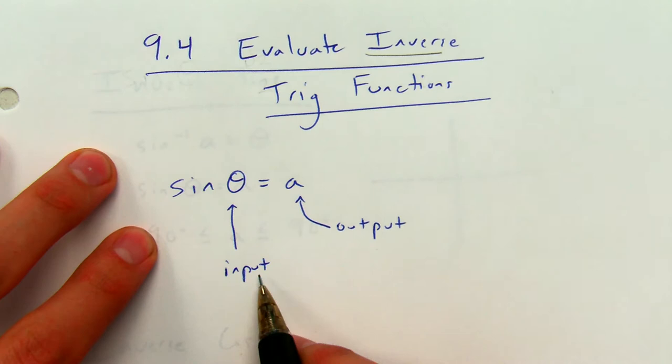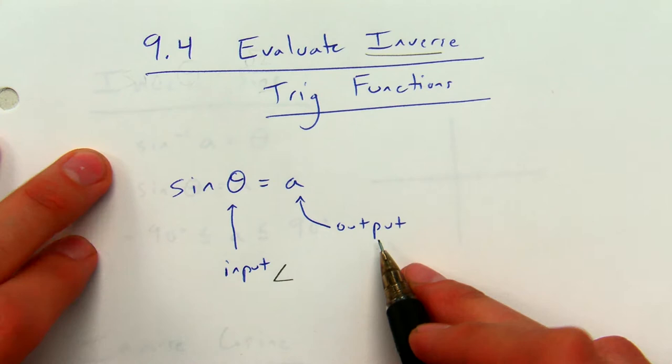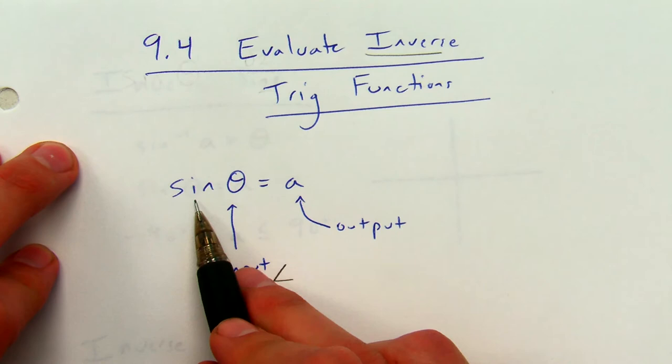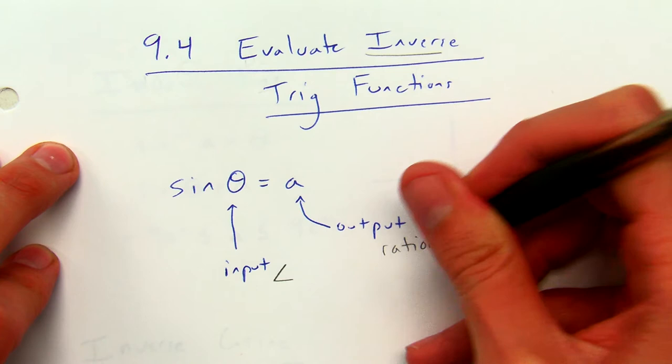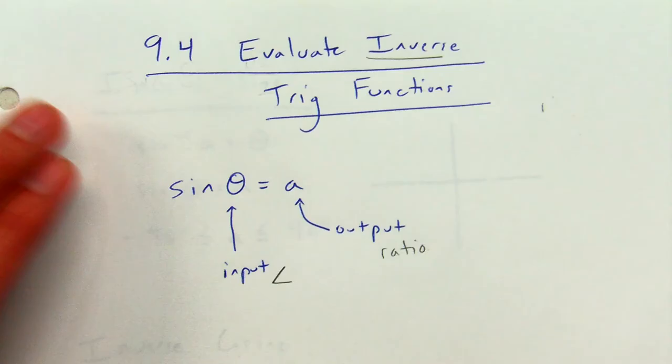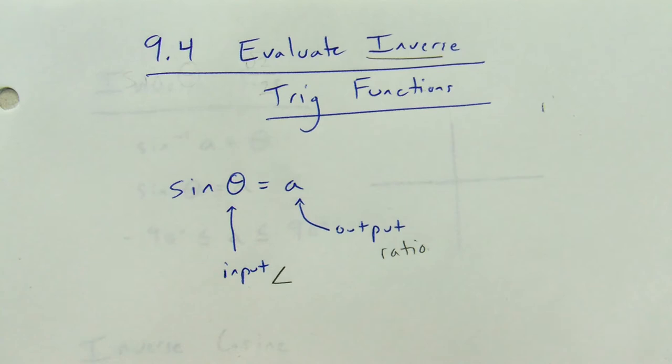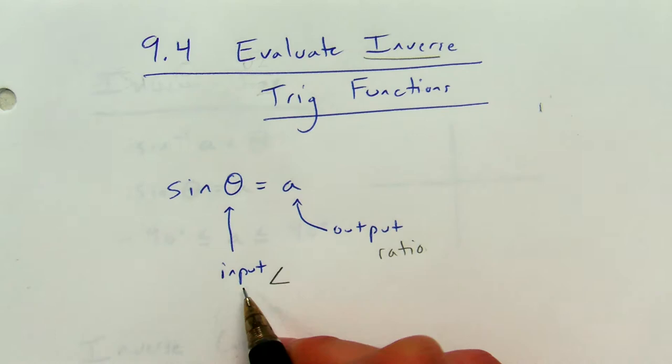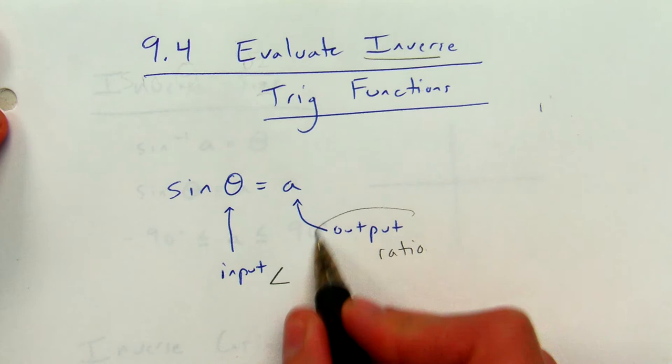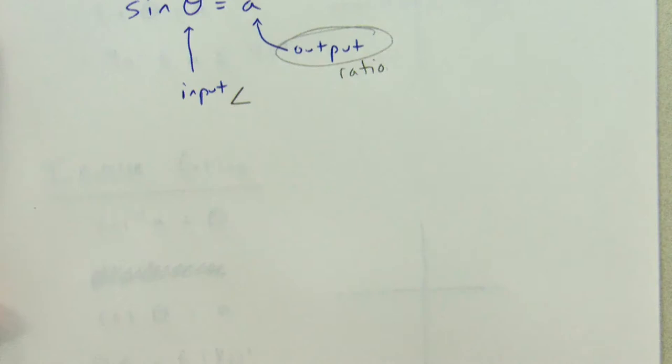For trig functions, what we put in — our input — is usually an angle. And what we get out — our output — is usually some kind of a number. It's a ratio, like opposite over hypotenuse for sine. So we get out a ratio. Before we talk about inverse trig functions, where we'll put in a number and get out an angle, let's think about what kinds of outputs we've been getting from our trig functions so far.